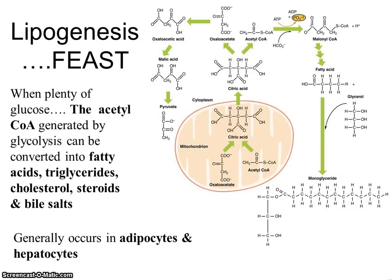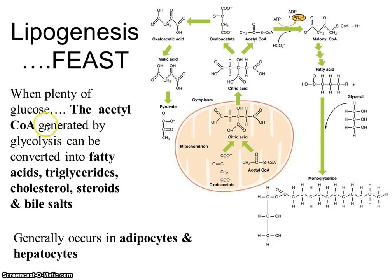In the feast state, when there's plenty of energy, lipids are often made. If you take in excess calories regardless of where they come from, you're going to make fat — that's your biochemistry. When you have plenty of glucose, the acetyl-CoA generated by glycolysis can be converted into fatty acids, triglycerides, cholesterol, steroids, and bile salts. This acetyl-CoA molecule is a starting point to get to a lot of other larger molecules.